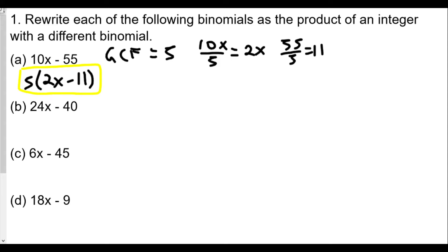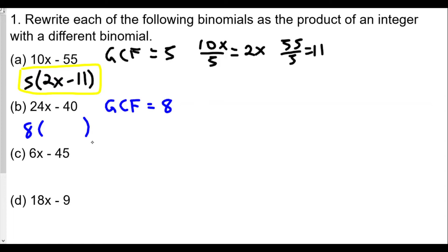For part (b), the GCF for 24x − 40: the biggest number that goes into both 24 and 40 is 8. Note that 4 does go in, but it's not the greatest — we always look for the greatest common factor. So the GCF is 8, and we find the binomial we multiply by 8 to get 24x − 40.